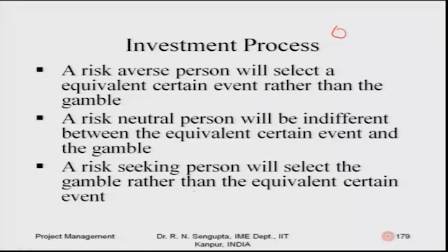A risk-averse person will select an equivalent certain event rather than the gamble. A risk-neutral person will be indifferent between the certainty equivalent and the gamble. A risk-seeking person will select the gamble rather than the certainty equivalent.